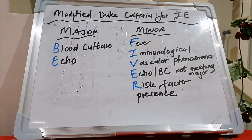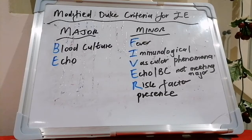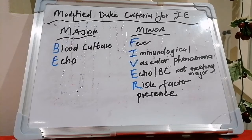If it's rejected endocarditis, there's probably a firm alternative diagnosis, or resolution of symptoms suggesting endocarditis with antibiotic therapy for less than four days, or no pathological evidence of endocarditis at surgery or autopsy with antibiotic therapy for less than four days, or it simply does not meet the criteria for infective endocarditis.